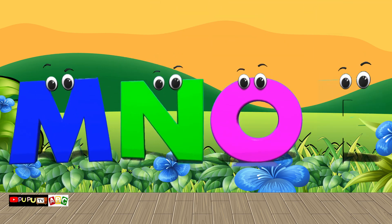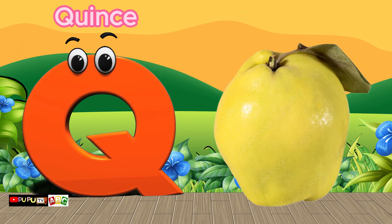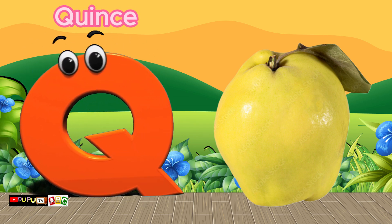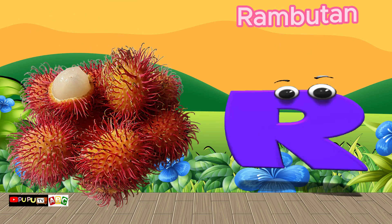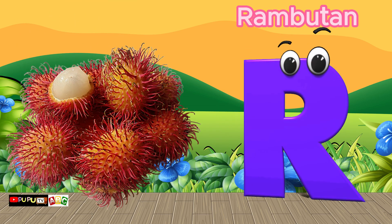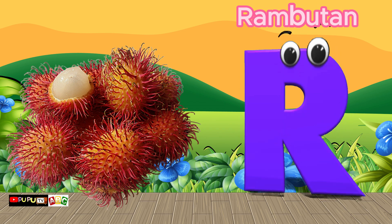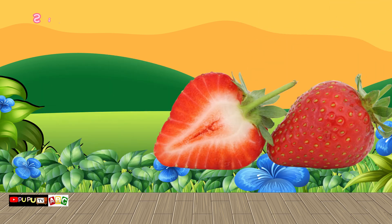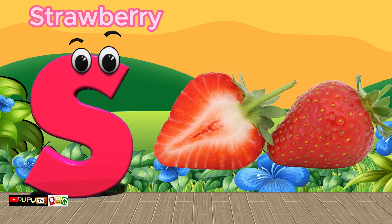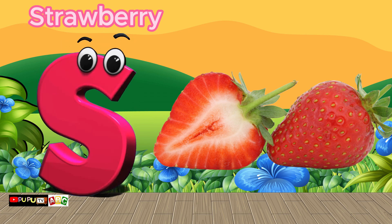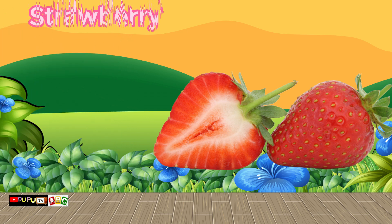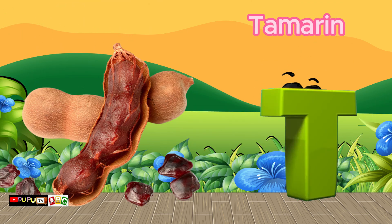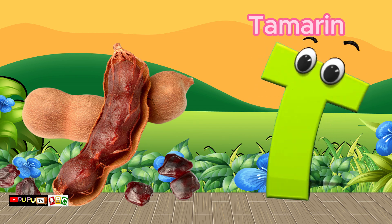Q is for Quince, qu-qu-quince. R is for Rambutan, r-r-rambutan. S is for Strawberry, s-s-strawberry. T is for Tamarind, t-t-tamarind.